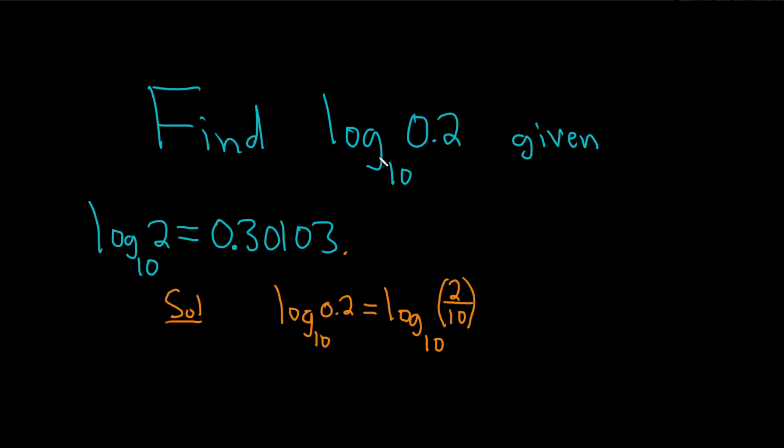And now we can use something called the quotient rule for logarithms. If you have the log base b of x over y, this is equal to the log base b of x minus the log base b of y. Right? The fraction turns into subtraction.